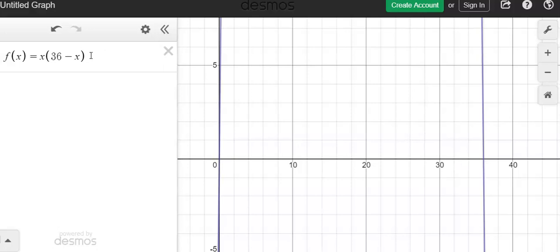I know it's quadratic because I have two linear factors that are being multiplied to each other. So x times this quantity, 36 minus x.